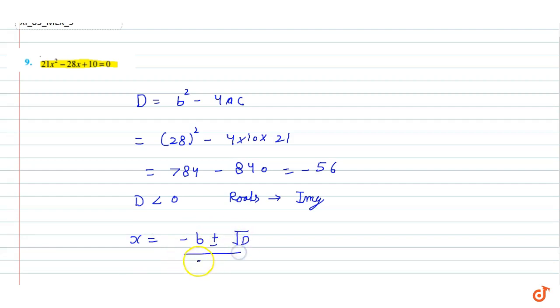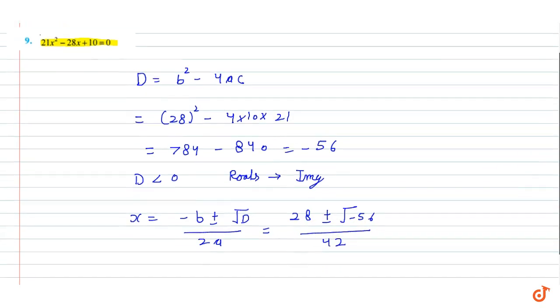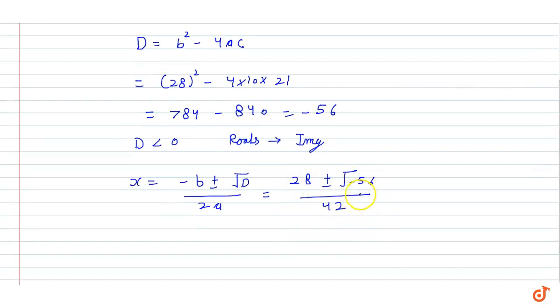Here, b value is minus 28, so it becomes 28 plus minus, D value is root of minus 56 upon 2a which is 42. Root of minus 1 is iota, upon 42.